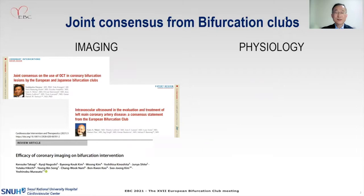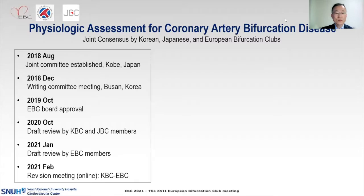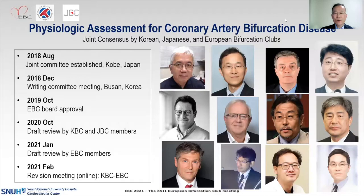There are several imaging consensus documents from the Bifurcation Club. Unfortunately, there is none about physiology, and that is the reason why we decided to start the project for physiologic assessment for coronary artery bifurcation disease. The joint committee was established in 2018, and in 2019, the EBC board approved this project. We had draft review meetings several times, and this year in February, we had a revision meeting between Korean and European Bifurcation Club members. I am taking this chance to thank all the members from these three clubs for their time and efforts on this joint consensus document.